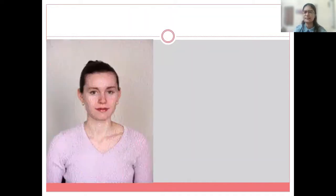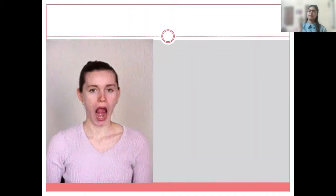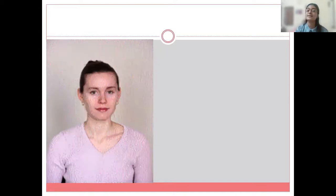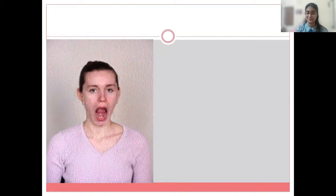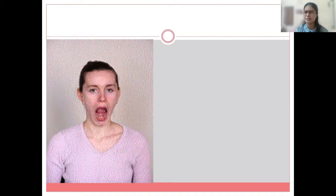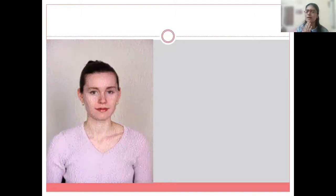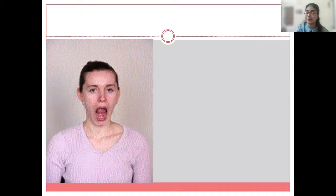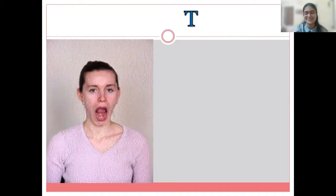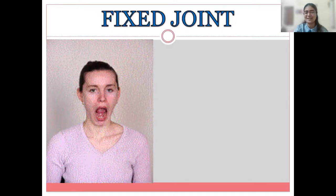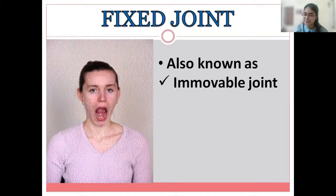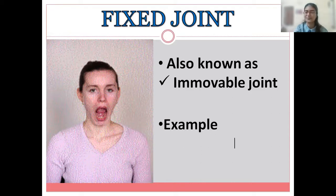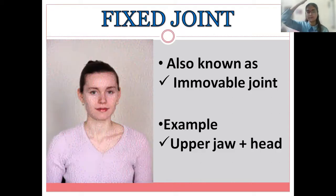So, this is the final one. This will be easy for you guys. Come on. Try it. What is this female showing? What is this ma'am doing? She is only able to move the lower jaw. So, the joint that is not moving is? Very good. It is a fixed joint. Also known as immovable joint. And what is the example? Very good. The upper jaw with the head part. Very good.